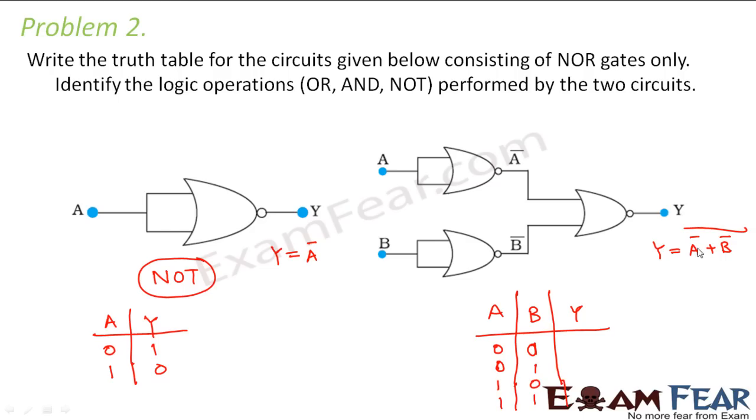So if you put both as 0 you will get 1 plus 1 that is 1 which when inverted gives 0. When this is 0 inverted it will become 1. This is 1 it will become 0. So 1 plus 0 is 1 which when inverted again becomes 0. Similarly this becomes 0 and this becomes 1. What is this truth table looking like? This truth table resembles the truth table of AND gate. Therefore it is performing the AND operation.